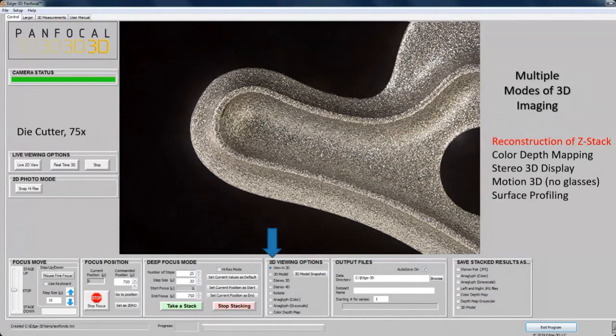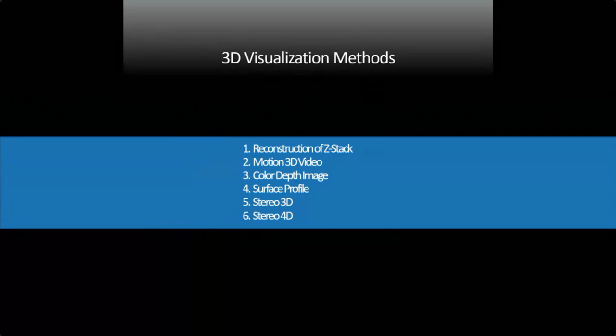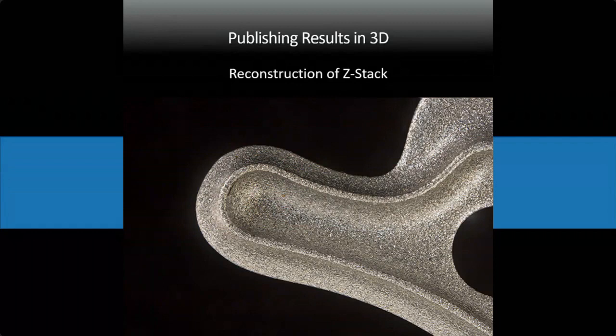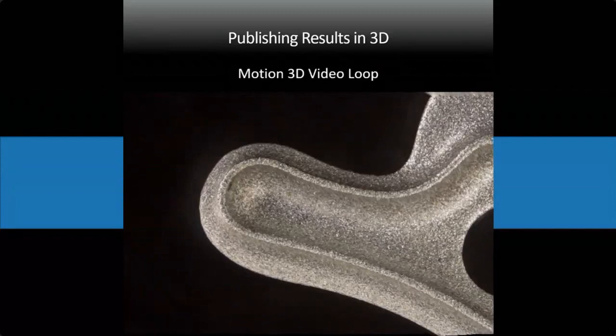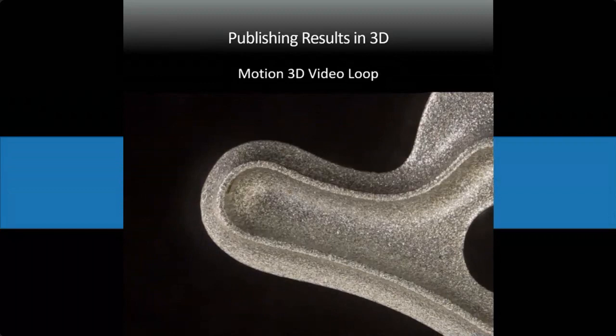Once the stack is captured, how do you visualize 3D information? What are the best methods for visualizing and publishing your results? You publish results similar to the way you would with a confocal microscope — you do a reconstruction of the Z-stack. You can show it as a 2D reconstruction of a three-dimensional object. Another way is to give a link to a video or animated GIF showing a rotational 3D video loop, which reveals the hidden depth information you wouldn't otherwise see.